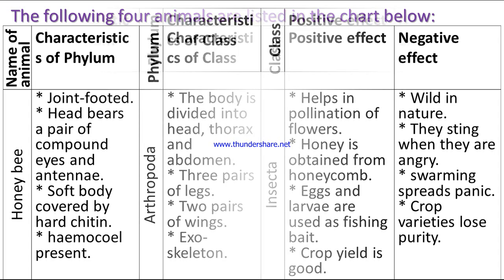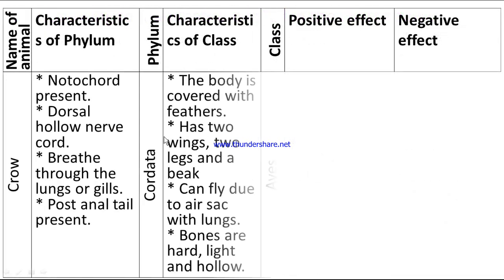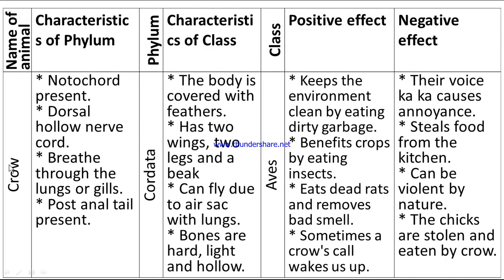The next animal is the crow. Characteristics of the phylum: notochord present, dorsal hollow nerve cord, breathes through lungs or gills, post-anal tail present. The phylum is Chordata.